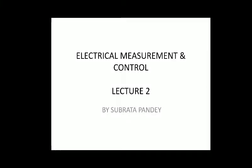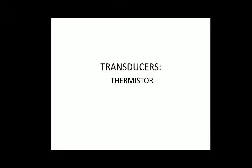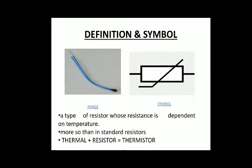Welcome to the second lecture on electrical measurement and control. Today we will discuss the thermistor. A thermistor is one type of transducer. On the left side you can see an image of a thermistor and on the right side you can see its symbol. A thermistor is a type of resistor whose resistance is dependent on temperature. Thermistors are made of such materials which change their resistance more compared to normal general-purpose resistors.